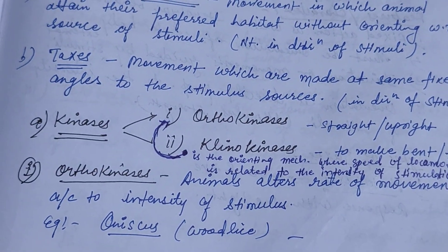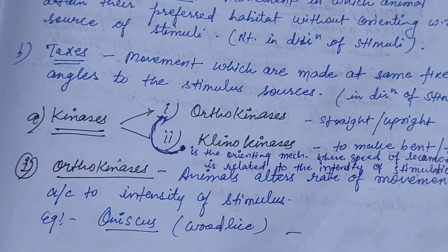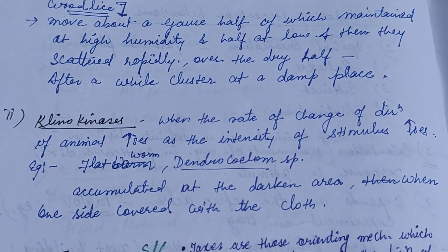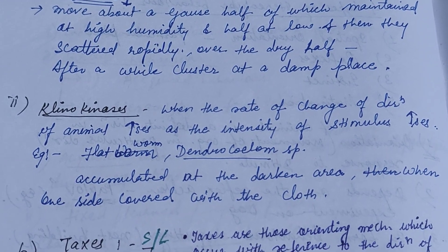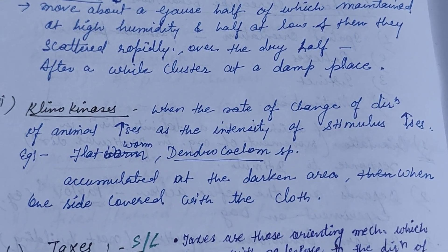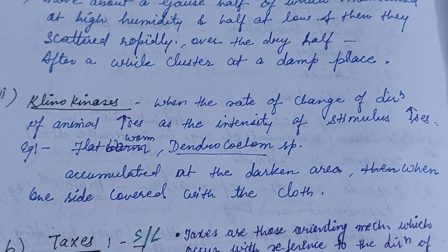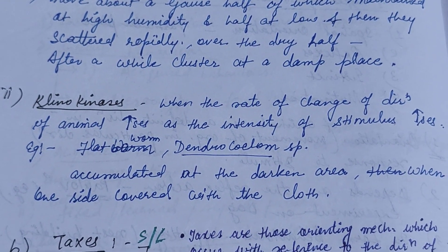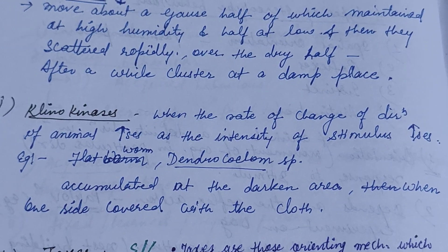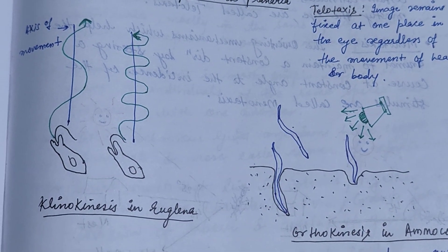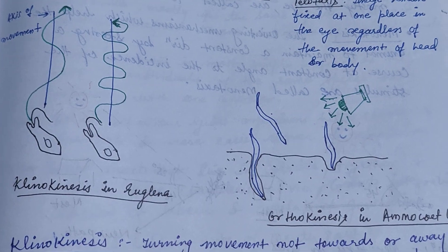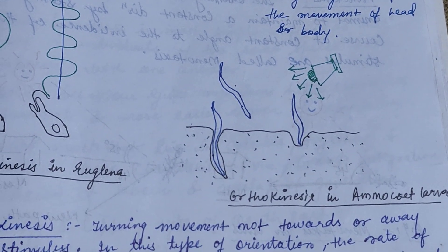In the orienting mechanism of orthokinesis, speed of locomotion is related to the intensity of the stimulus. Oniscus, or the woodlouse, is an example: woodlice placed in a gauge half maintained at high humidity and half at low humidity scatter rapidly over the dry half and after a while cluster at the damp place. In klinokinesis, the rate of change of direction of an animal increases as the intensity of stimuli increases. Example: flatworm Dendrocoelum species accumulate at a darkened area, where one side is covered — showing klinokinesis.